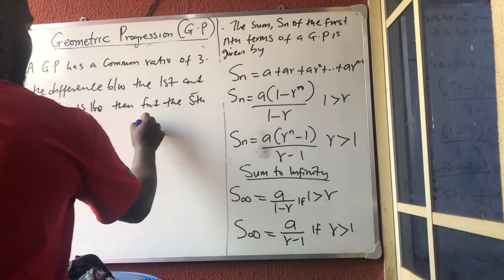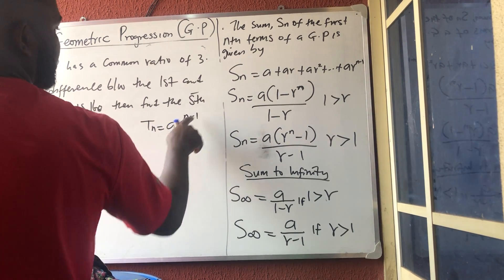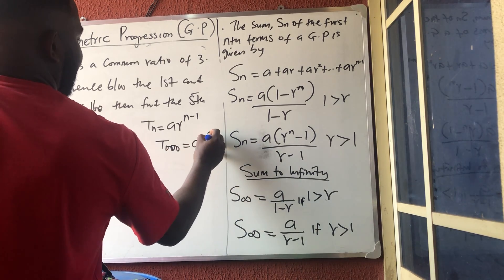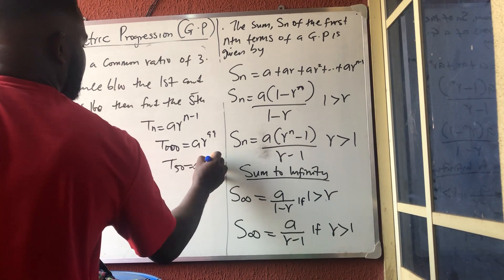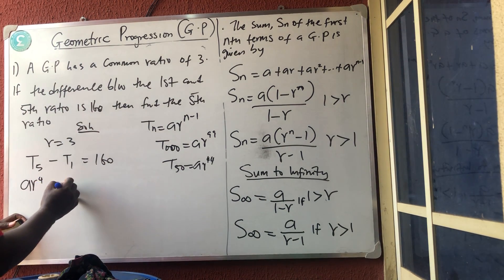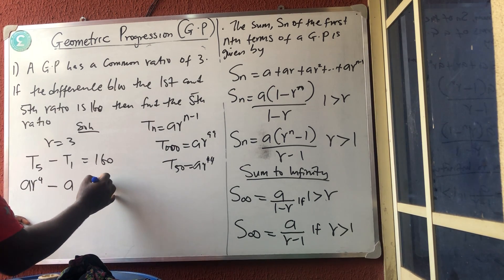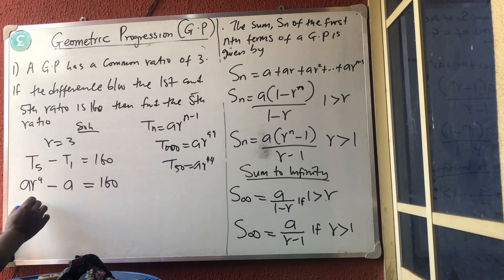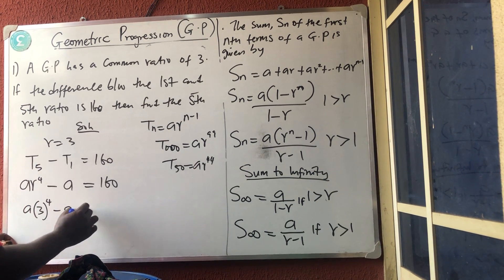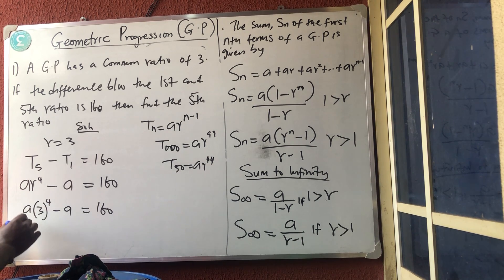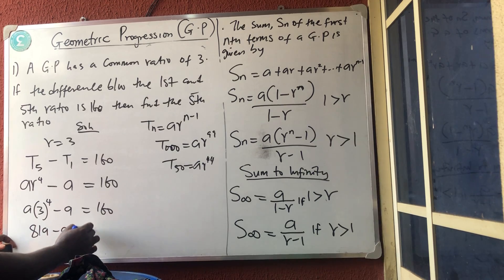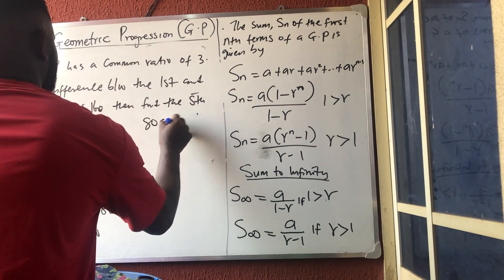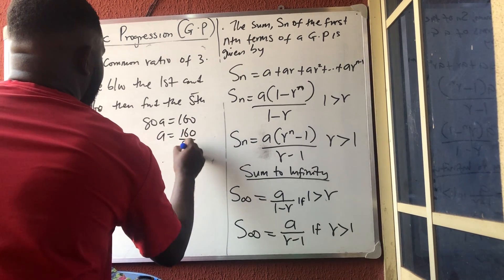Using the formula T_n = A × R^(n−1), T5 = A × R^4 and T1 = A. So A × R^4 − A = 160. Substituting R = 3: A × 3^4 − A = 160, which gives 81A − A = 160, so 80A = 160, therefore A = 160 / 80 = 2. The first term is 2.